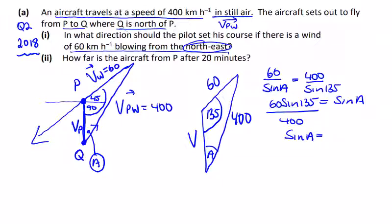Making this quite a small angle, A is equal to 6.09 degrees to 2 decimal places. This direction is east of north 6.09 degrees.